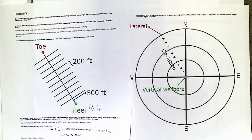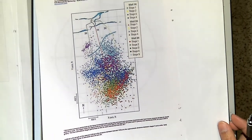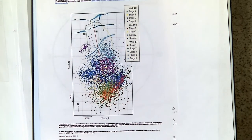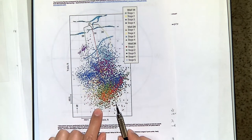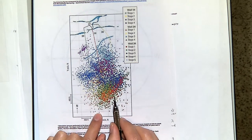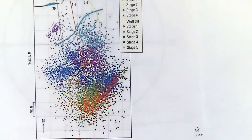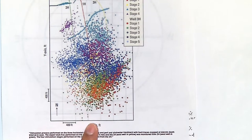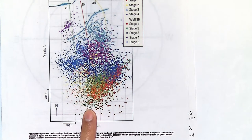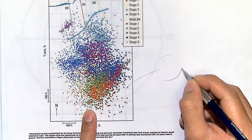The last problem is about microseismicity — an example with three wells where they did completion with zipper fracturing. Each color-coded cloud tells you more or less — but not exactly — how far the fractures went and how far they changed the stresses in that location. Remember: each of these points is an event of shear reactivation.